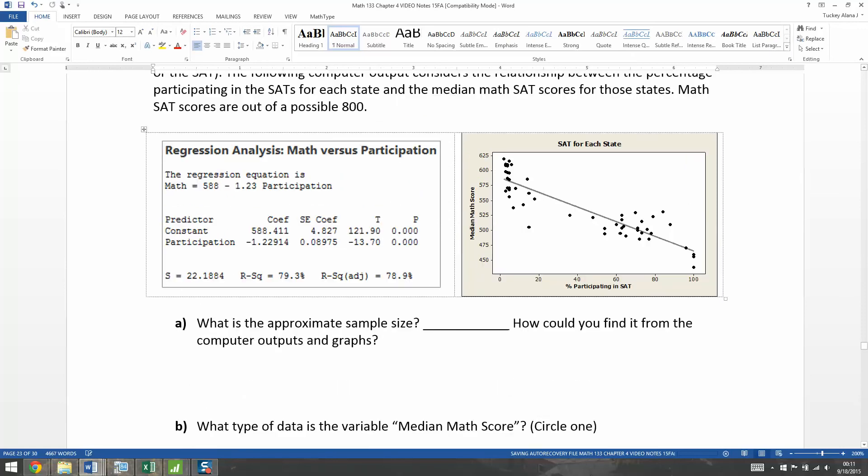Now the approximate sample size, let's see here. Well, this isn't possibly the whole of all the states, so we would have to count. So, 1, 2, 3, 4, 5, 6, 7, 8, 9, 10, 11, 12. So you'd be counting all the different dots. Well, what do you know? It actually works out to be 50. So this is 50.